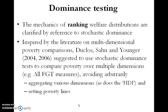Dominance testing uses the mechanics of ranking welfare distributions, which are clarified by reference to stochastic dominance. Based on literature by Duclos and Younger, they suggest that stochastic dominance testing should be used to compare poverty over multiple dimensions — for example, all FGT measures — to avoid arbitrarily using an aggregated dimension like the Human Development Index, or setting poverty lines.